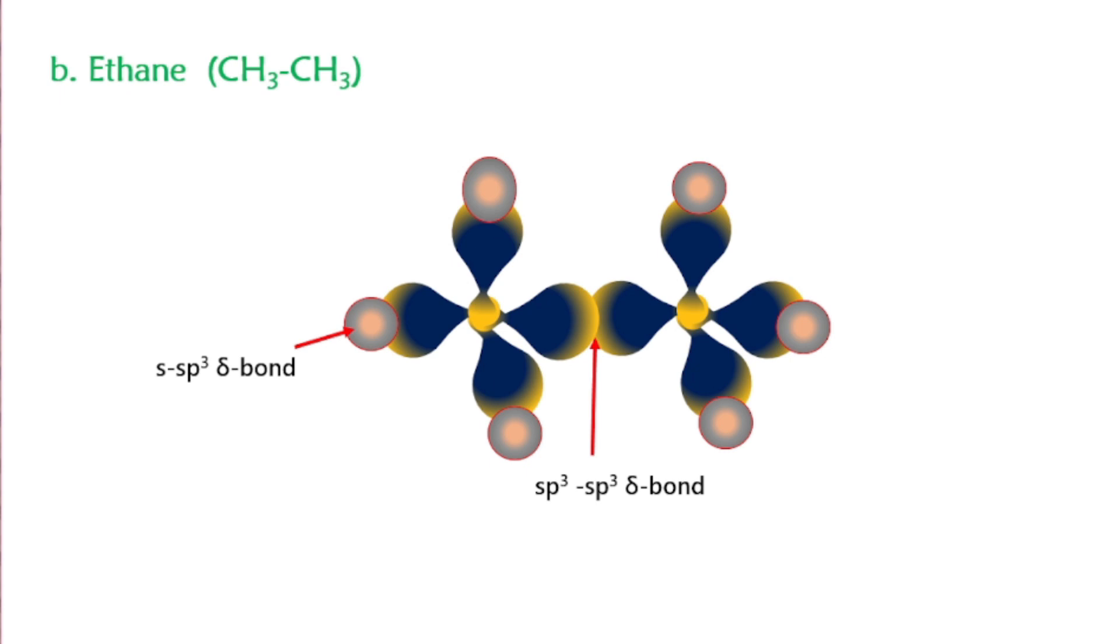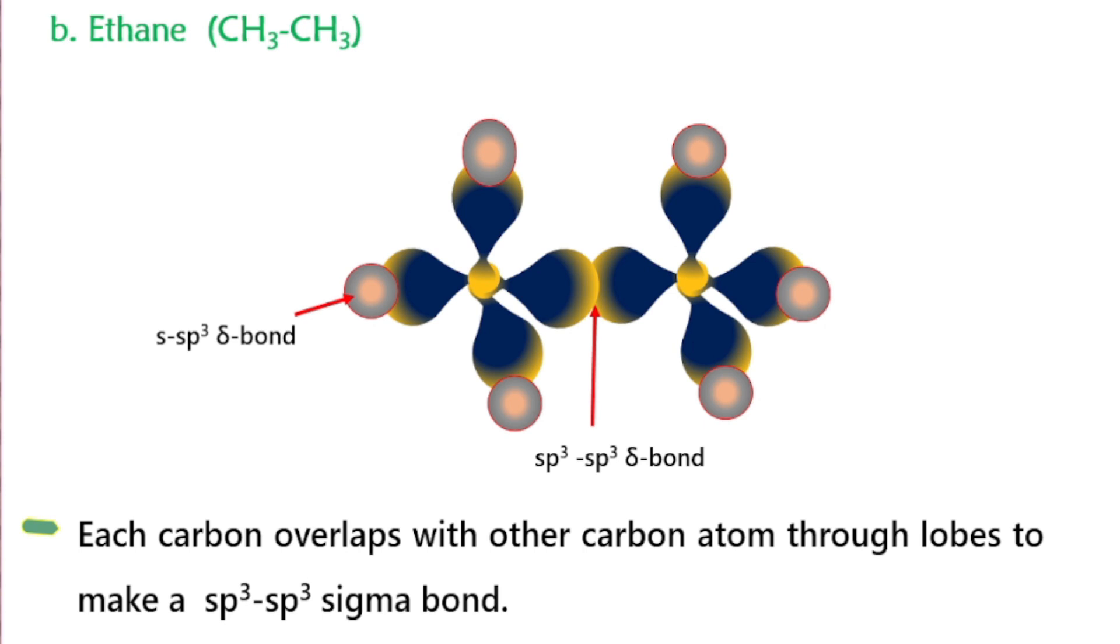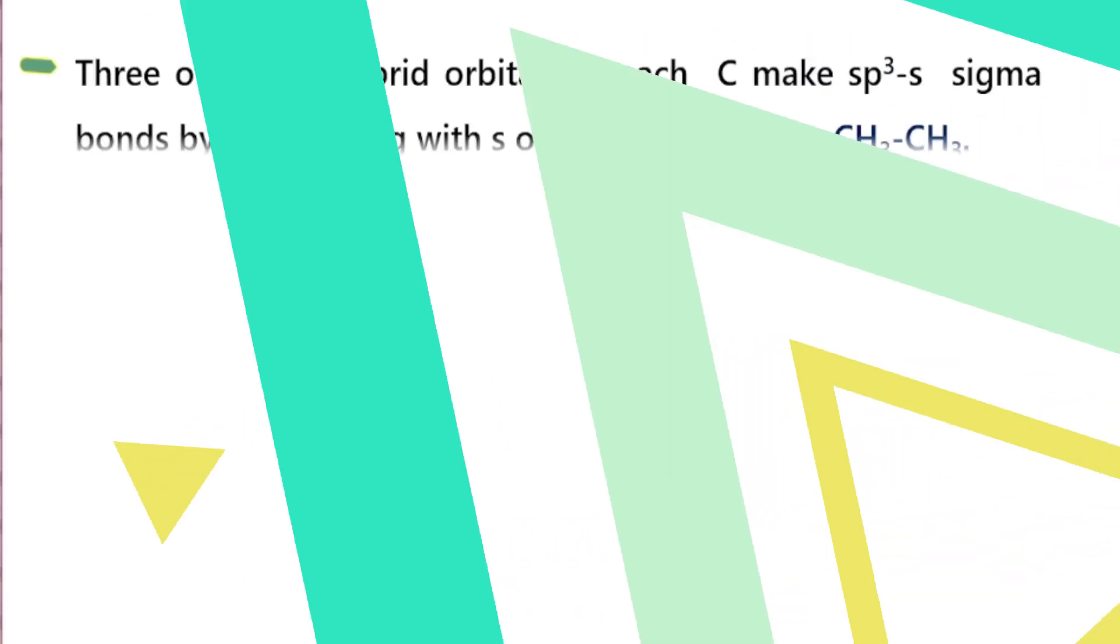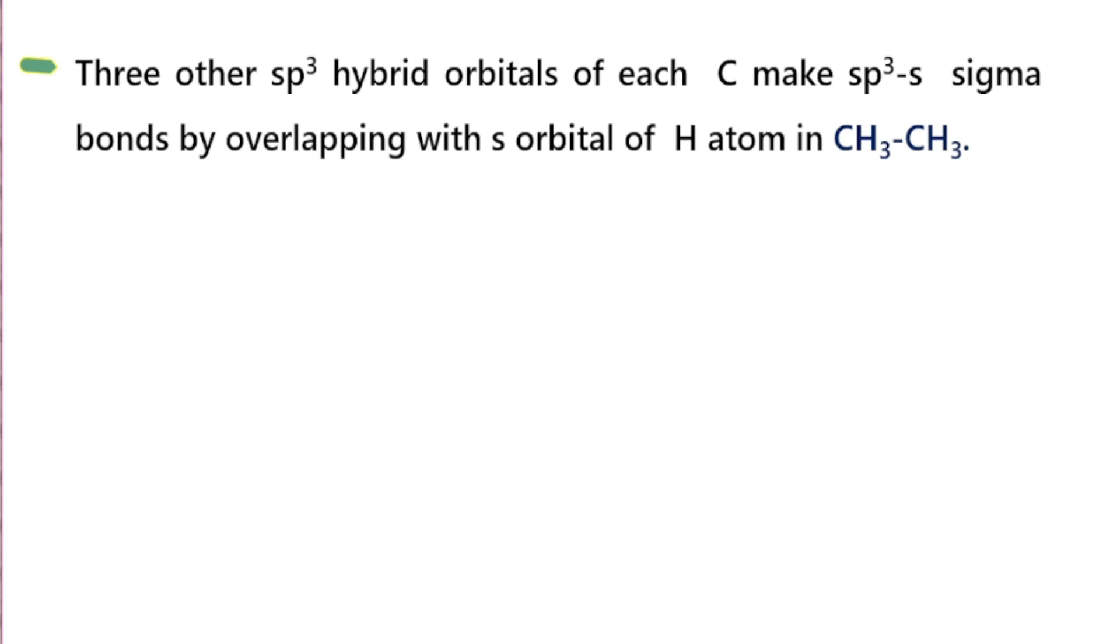In ethane, sp3-sp3 sigma bond: each carbon overlaps with the other carbon atom through lobes to make an sp3-sp3 sigma bond. Each sp3 carbon hybridized orbital overlaps, so this one is sp3-sp3 sigma bond. When carbon atoms create a bond it will be sp3-sp3, and here only one sp3-sp3 sigma bond. Three other sp3 hybrid orbitals of each carbon make sp3-s sigma bonds by overlapping with s orbitals of hydrogen atoms in ethane.